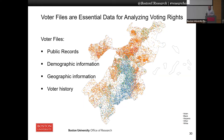Voter files are public records in the United States. Every state keeps a list of every single registered voter — their name, their address, some basic demographic information, as well as their voter history. Who you vote for is always private; nobody sees your ballot. But the fact that you voted is always public. These voter files maintain lists of every time you vote, and sometimes whether you voted absentee, by mail, or early.